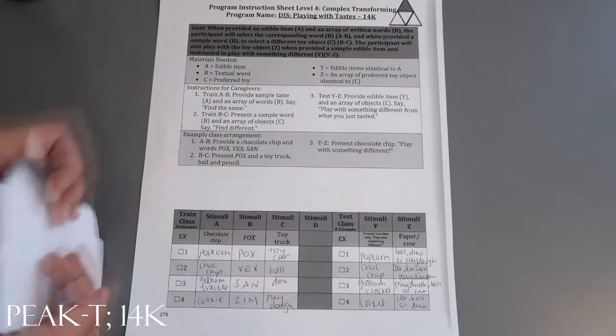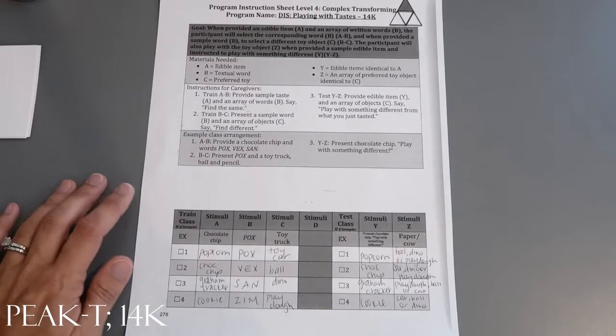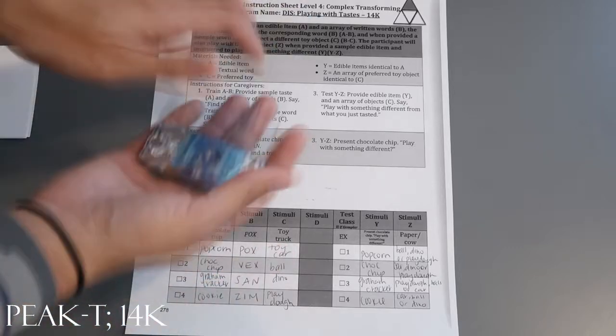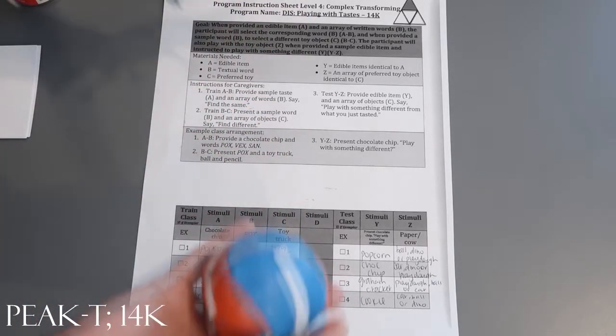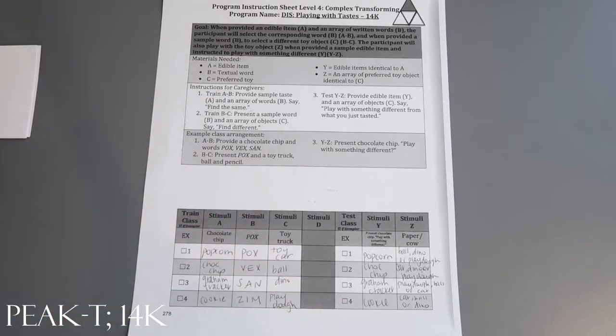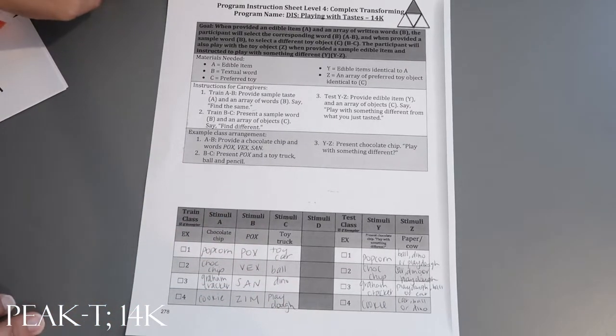For C, we need preferred toys. We went ahead and pulled a toy car, a ball, a dinosaur, and Play-Doh for the fourth item.